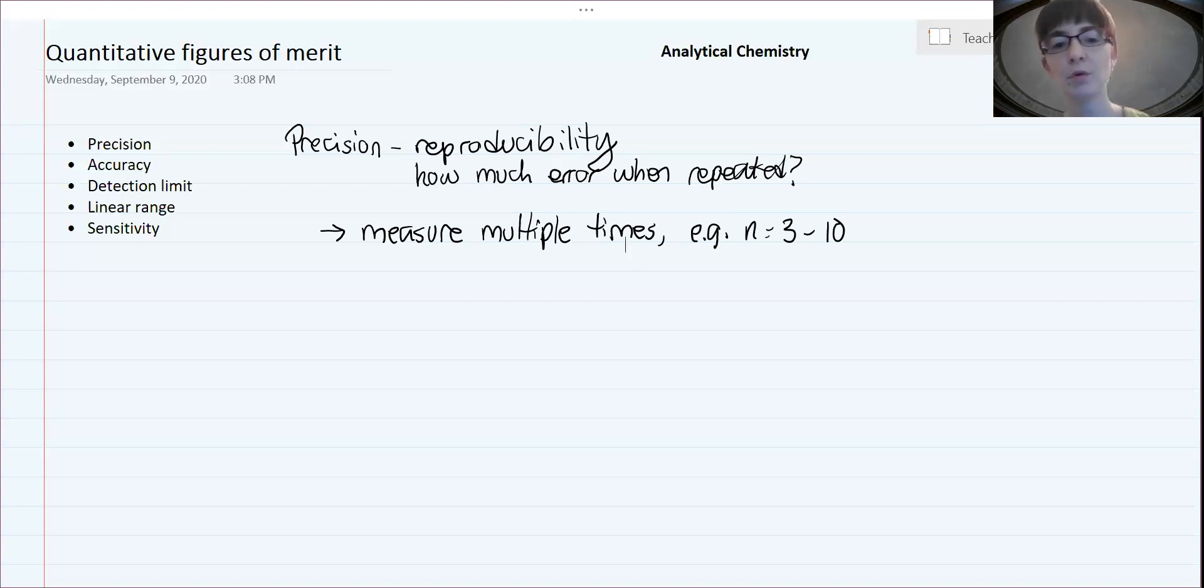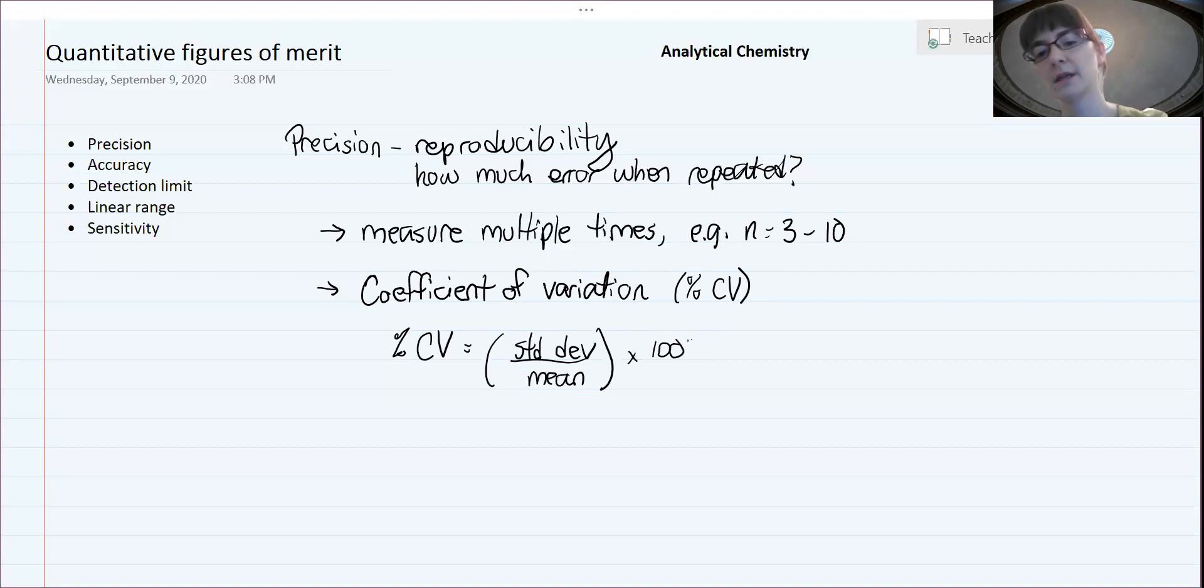Then we can calculate what we call the coefficient of variation. This is related to the standard deviation that you may be more used to, but it does a better job at comparing the variability between samples. This is often reported as percent CV for coefficient of variation. The equation is simply percent CV equals the standard deviation of all the measurements that you made over their mean, and then we multiply it by 100 to get it into percent units.